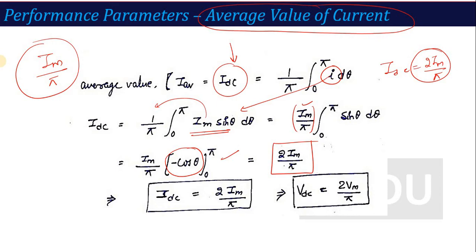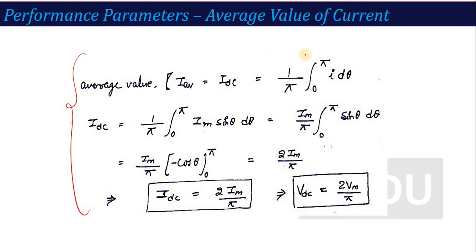Similarly, if a question asks for the average value of voltage instead of current, you drive it the same way. Wherever we wrote i, write v; the V value will be Vm sin θ, Vm goes outside as a constant, sin θ integrates to give a factor of 2. So the average value of voltage for the full wave rectifier is Vdc = 2Vm/π.